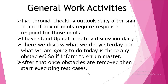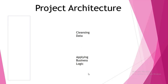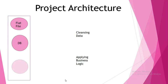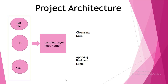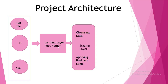Coming to project architecture: in the source layer there are different source files - flat files, DB, and XML files. This is the landing layer root folder - once all source files are landed into the root folder of the landing layer, one copy is archived and stored for future purposes. Then when all the conditions are met according to the data and client requirement, those data move to the staging layer.